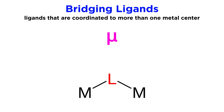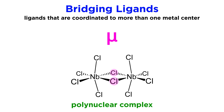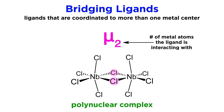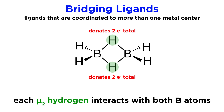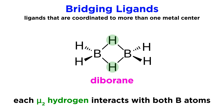Before moving on, we should also mention another symbol, mu, and what it means when associated with a ligand. This symbol means the ligand is coordinated to more than one metal center, and is thus referred to as a bridging ligand. We will commonly see these with polynuclear complexes, which have more than one metal atom interacting with one another in addition to all the ligands. In such situations, the number next to the mu tells us how many metal atoms the ligand is interacting with. The number of electrons the ligand contributes will actually stay the same as what we would expect under normal circumstances — it is simply that those electrons are being distributed amongst more than one metal center, like the way that one hydrogen atom was able to interact with two boron atoms even with just one pair of electrons in diborane.